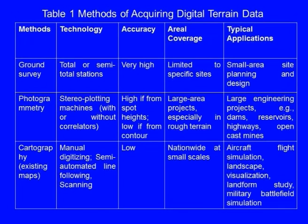The next table provides brief information regarding the various methods of acquiring digital terrain data, along with the appropriate technology, the accuracy with which data can be collected, the type and extent of area coverage, and typical examples. For ground surveying based methods of data collection, the technology that can be used is total or semi-total stations. The accuracy by this method is very high. However, the area coverage is limited and is useful for specific sites, with typical applications including small area site planning and design.